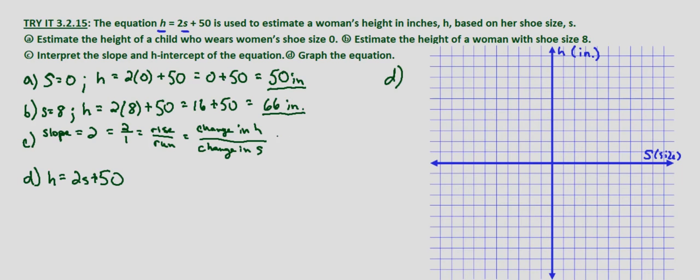So this means that the slope means for every one increase in shoe size, height increases by 2 inches. Or you could say for every increase in shoe size of one, height increases by 2 inches, with our independent variable shoe size determining height.